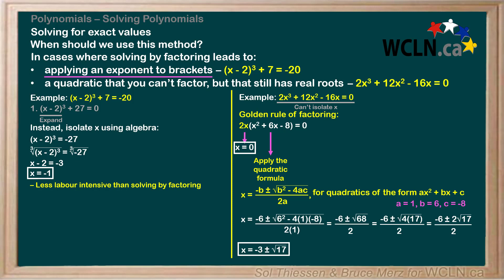We've just seen the two cases where you'll want to solve for exact values and how to do so in each case. When solving by factoring would lead to applying an exponent to brackets, isolate x using algebra instead of factoring, and when you're left with a quadratic that you can't factor but that still has real roots, apply the quadratic formula. Hopefully you're now comfortable solving any polynomial equation using one of the two methods we've learned, either solving by factoring or solving for exact values. Good luck in your practicing!